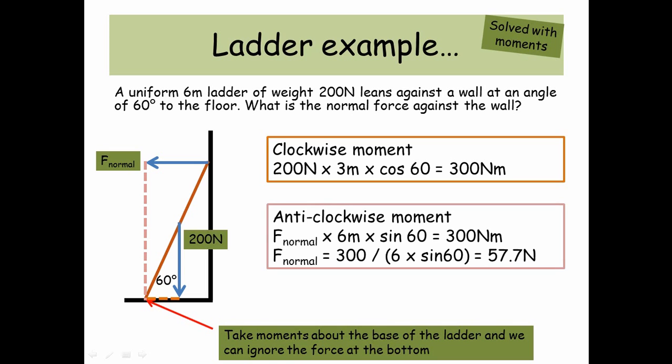And then going anticlockwise, well, the normal force, this time we're going to use the whole length of the ladder, which is 6 meters, and times by sin 60, because it's the opposite to the hypotenuse. And we know that that is equal to 300 newton meters, because it's got a balance with the clockwise moment. So we just need to rearrange now, and then we find that our normal force is equal to 57.7 newtons.